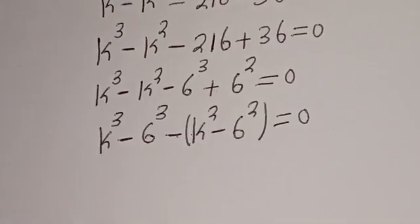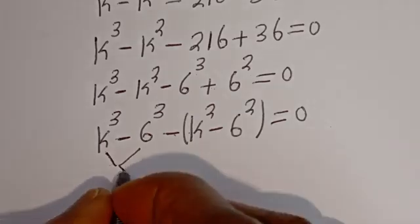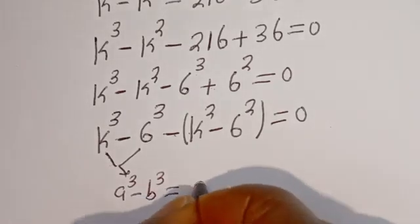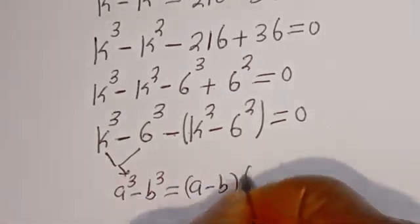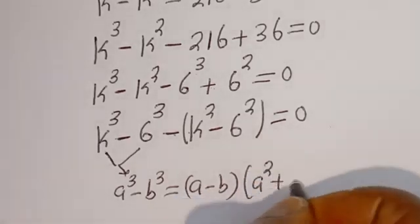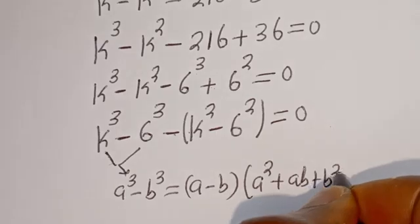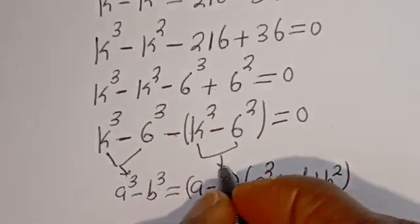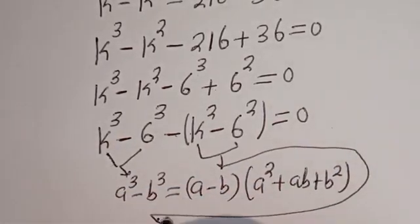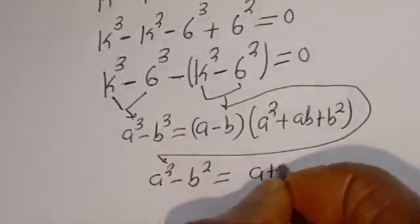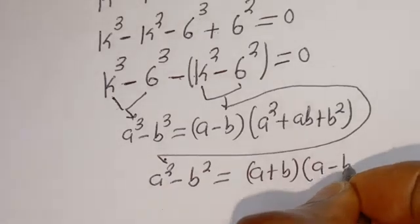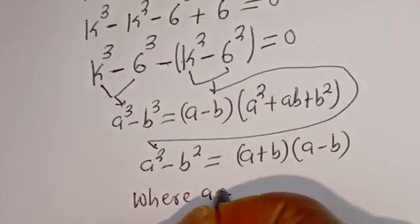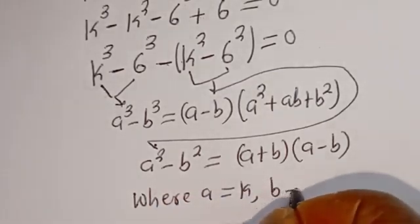Now take note: if you have a to the power of 3 minus b to the power of 3, this can be factored using the difference of cubes formula: a minus b, times the bracket. And here A is equal to K and B is equal to 6.